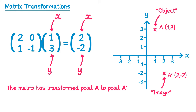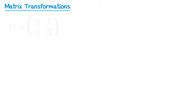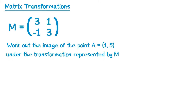Now let's look at how a question could be worded. Imagine we have a matrix M which equals [3 1; -1 3], and the question may be worded: work out the image of the point A, which is coordinate (1, 5), under the transformation represented by M. So M is a matrix and it represents a transformation. If you take a point A and multiply it by the matrix M, it will give you a point A dash, which is the image of that point.